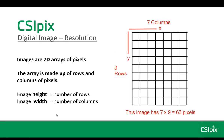Just a quick review: images are 2D arrays of pixels. The array is made up of rows and columns of pixels. Image height equals the number of rows and image width equals the number of columns. So if this was an image, it would have 7 columns and 9 rows for a total of 63 pixels.